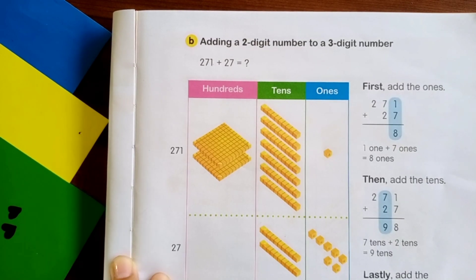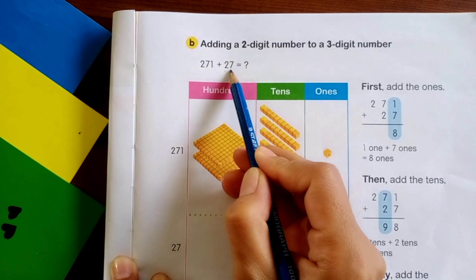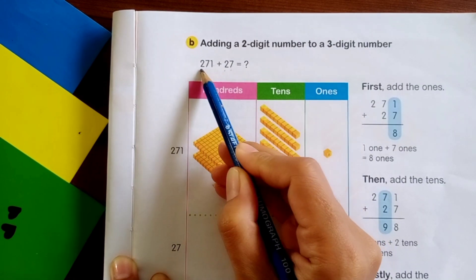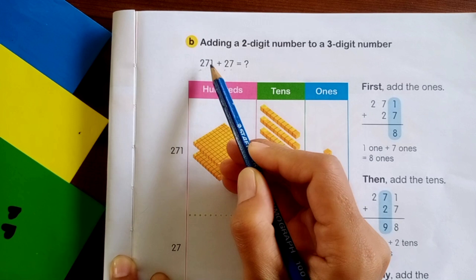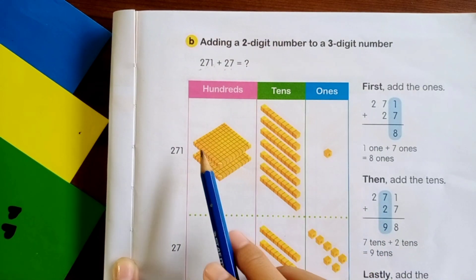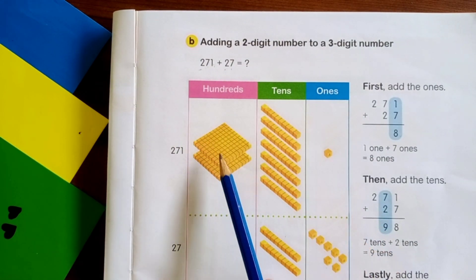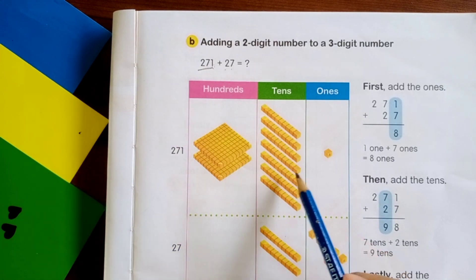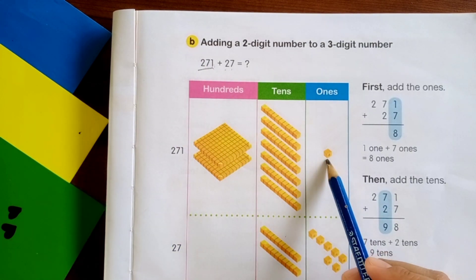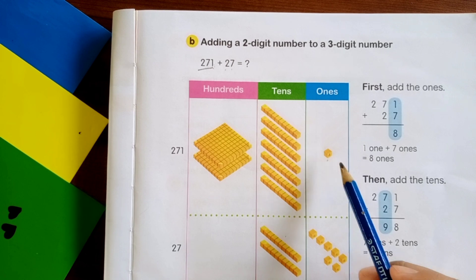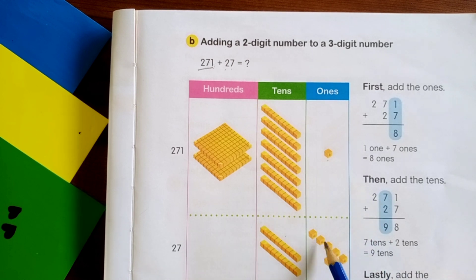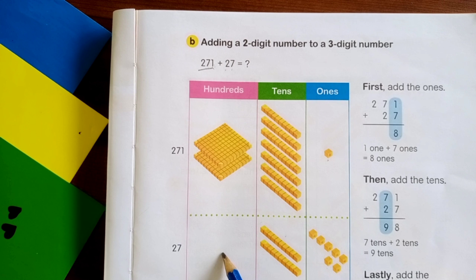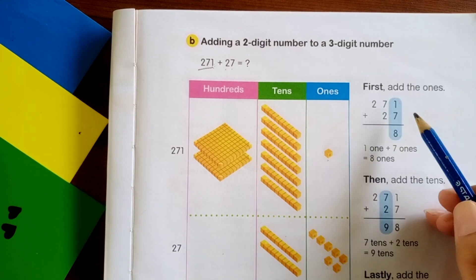Now, we add two digit number to three digit number. Again put them on place value table first. 271 plus 27. There is no hundreds, right? Next, move to place value chart.